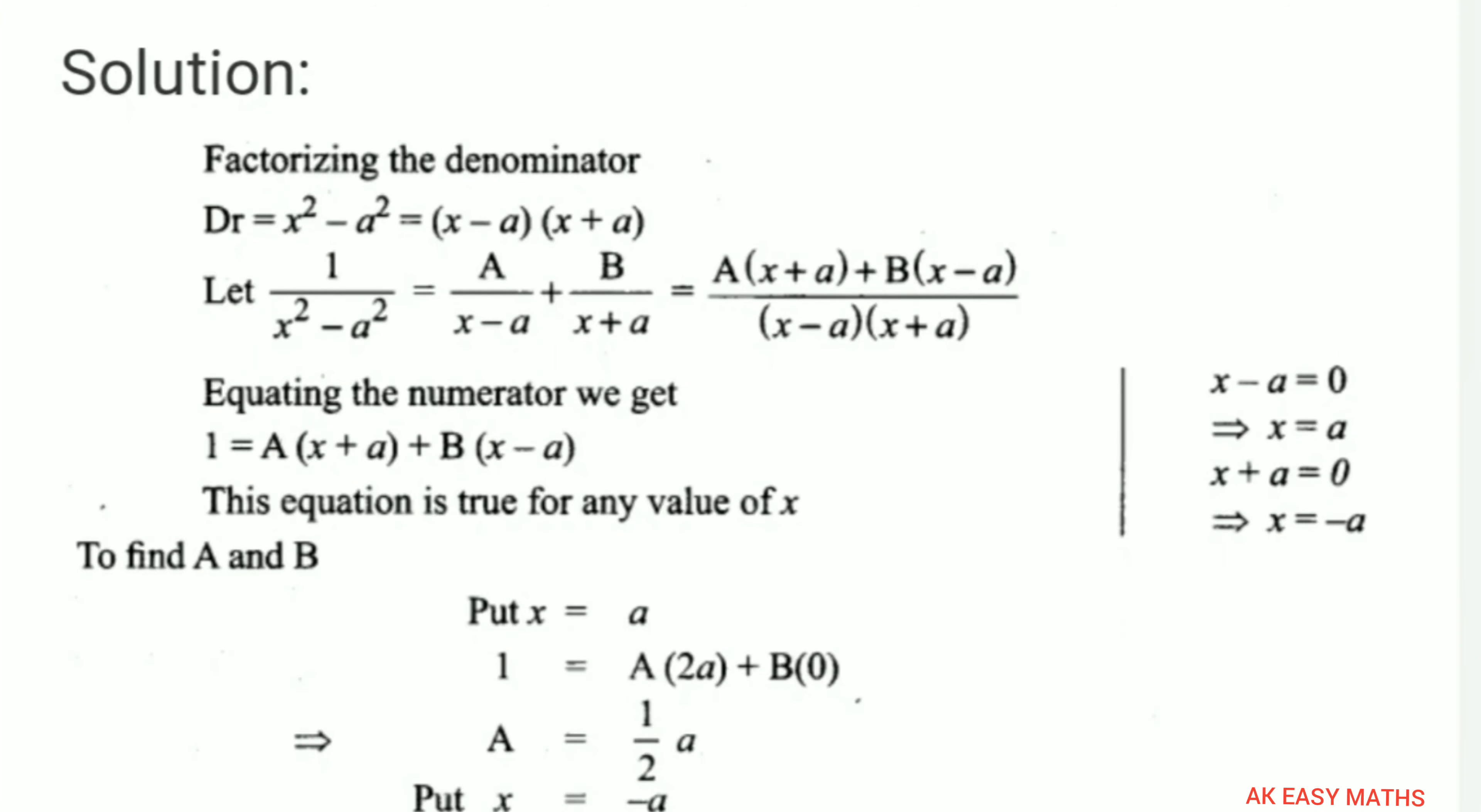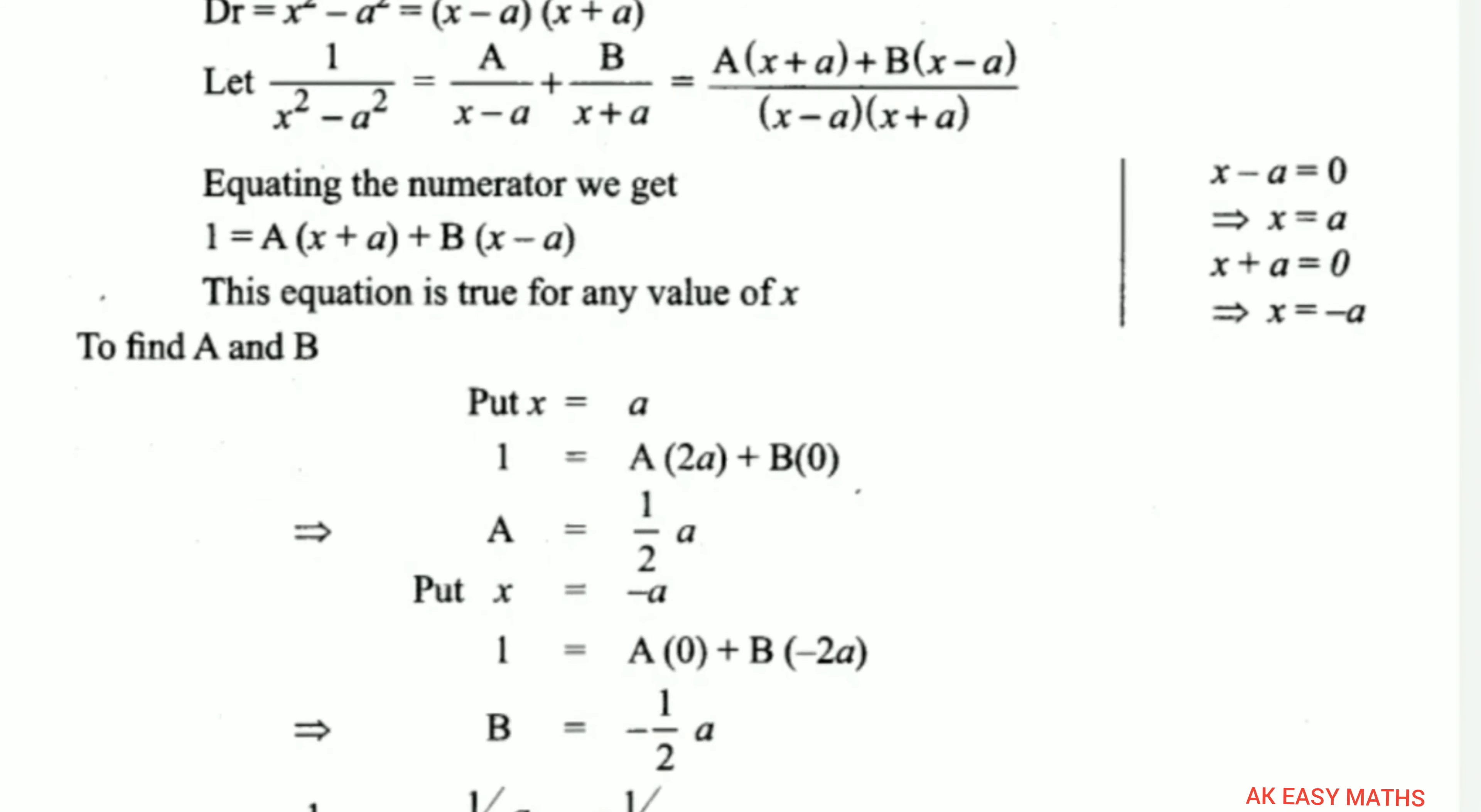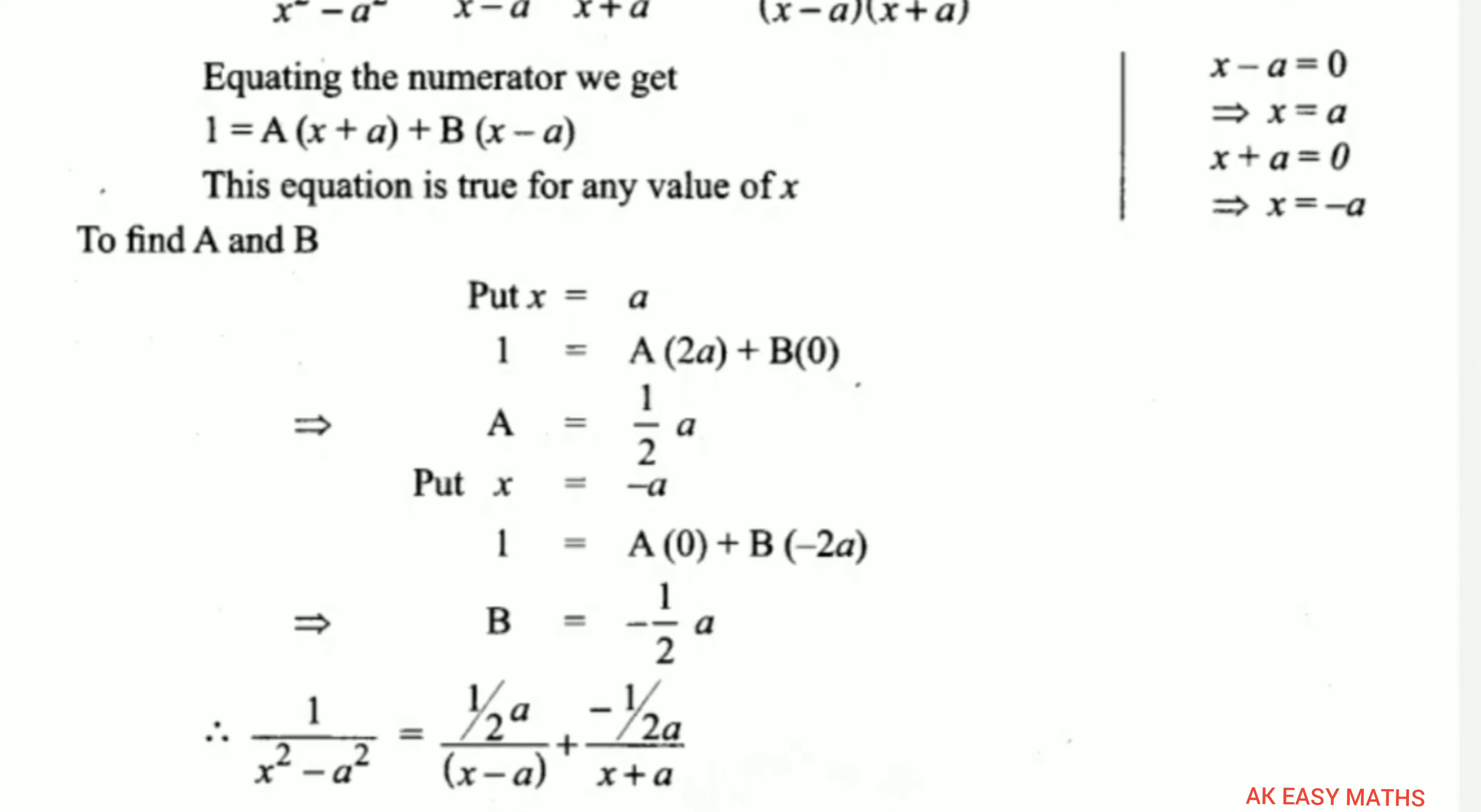Equating the numerator, we get 1 = A(x + a) + B(x - a). If we substitute the value x equal to a, then b times 0 and a times 2a equals 2a. By cross multiplication, A equals 1 by 2a.